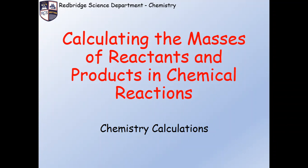In this video we are going to look at how to calculate the masses of reactants and products in chemical reactions. There's no straightforward formula to do these kind of calculations, rather a series of steps that you need to follow. So we're going to look at an example and I'm going to explain these steps as we go through.